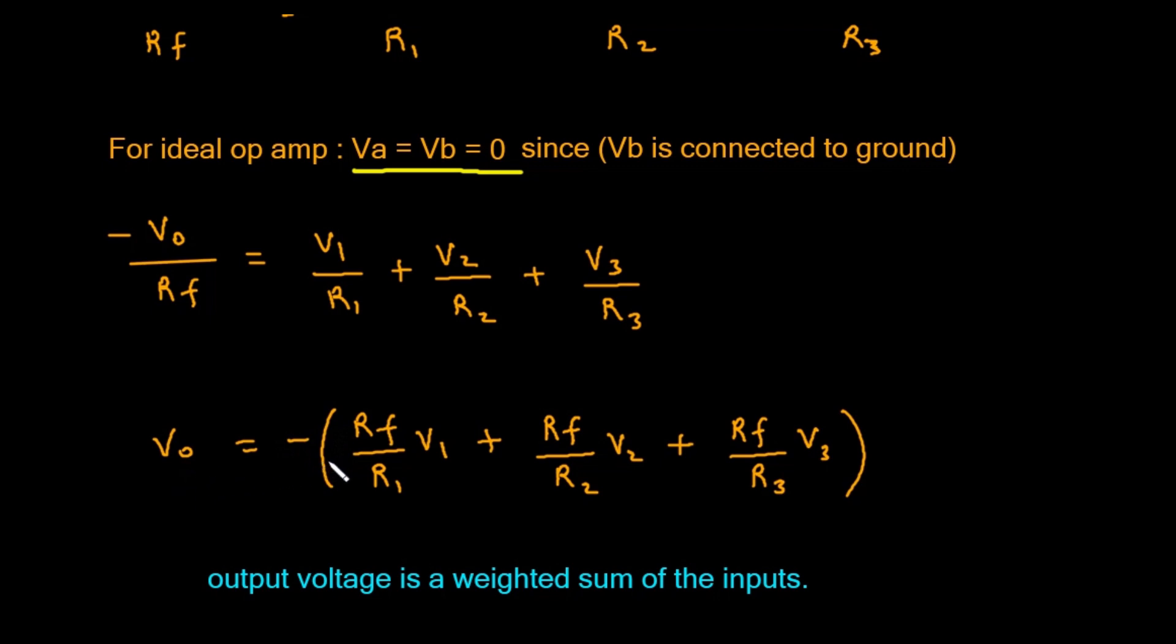The output voltage, Vo, equals the negative of a large expression in parentheses. Inside the parentheses, we have: Rf divided by R1, multiplied by V1, plus Rf divided by R2, multiplied by V2, plus Rf divided by R3, multiplied by V3.